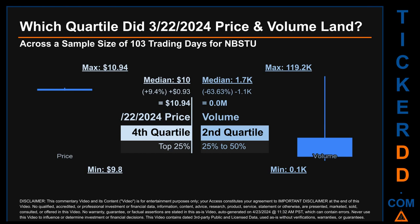The day's volume landed within the second quartile — that is, within the 25 to 50 percent range of all sampled daily volume — which saw a max daily volume of 119,200 and a minimum of 100. Quartiles tell us about the spread of a data set by breaking that data set into quarters, just like how the median breaks the set into half. NBSTU has a median price of $10.00; therefore, March 22nd, 2024's price was higher from that middle marker by 9.4 percent. The day's volume of zero million was less than the median by 63.63 percent.